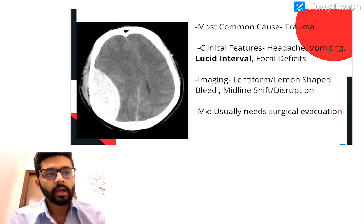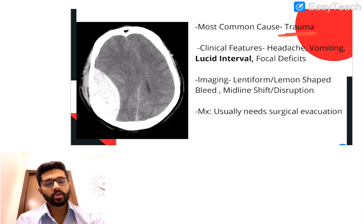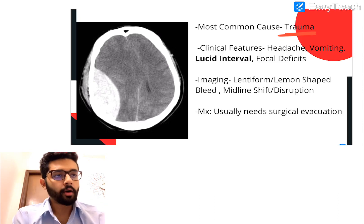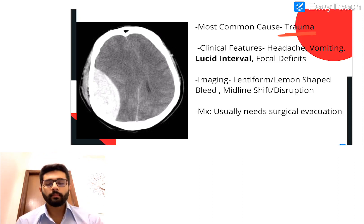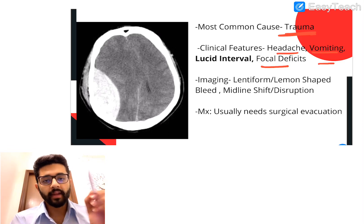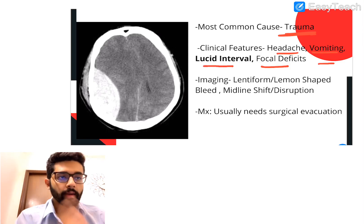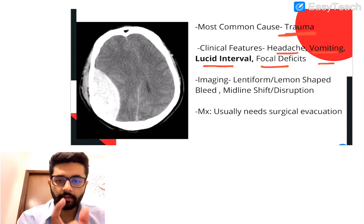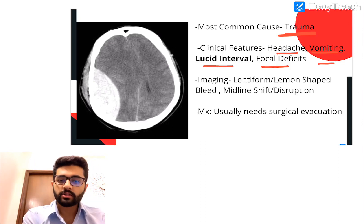Now let's look at clinical features. The patient usually presents with a history of trauma — usually blunt force trauma to the lateral aspect of the skull. All brain bleeds present with similar features including headache, vomiting, seizures, and sometimes focal neurological deficits. But a very typical symptom of EDH is the lucid interval — a period of complete consciousness which lies between two intervals of unconsciousness or altered consciousness.